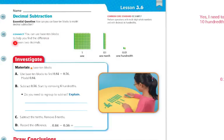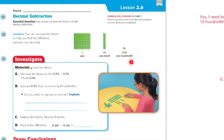You can use base 10 blocks to help you find the difference between two decimals. We're using the flat as a 1, the long to represent 1 tenth, and the small cube to represent 1 hundredth. So the materials are the base 10 blocks.